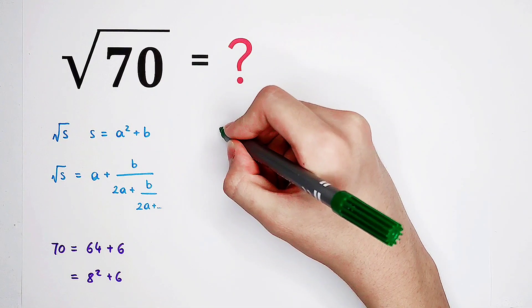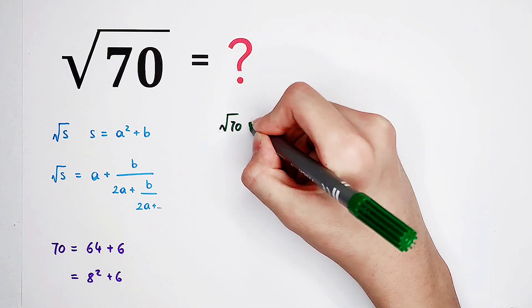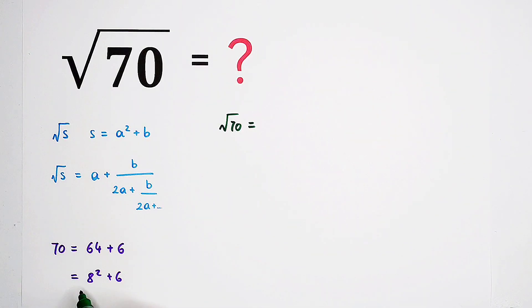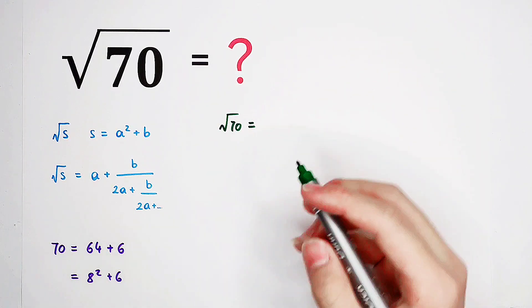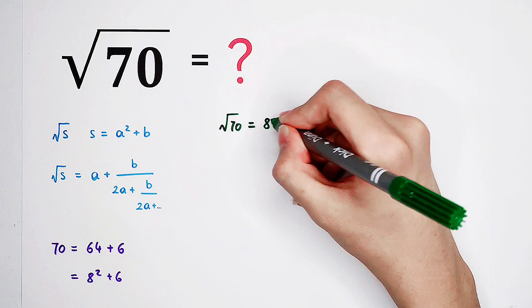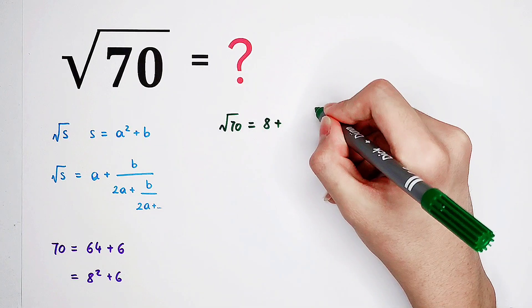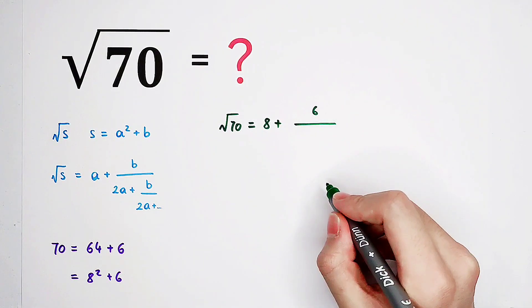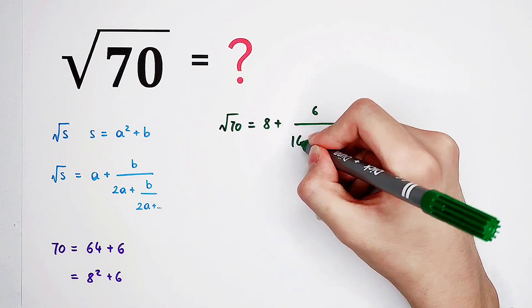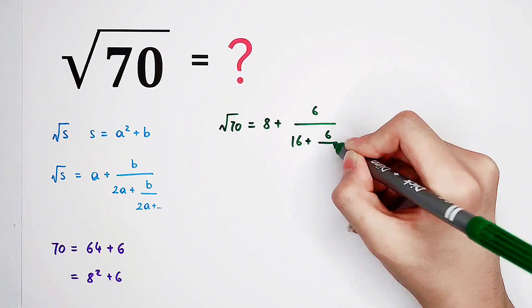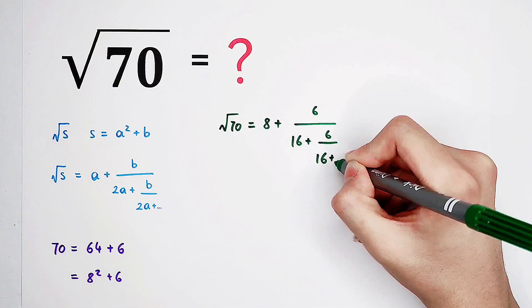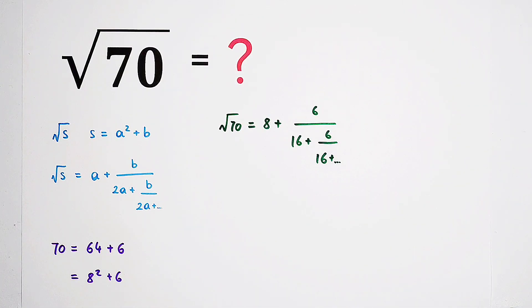Then, square root of 70 is, of course, a is 8, b is 6. It is a plus 8 plus 6 over 2a is 16, plus 6 over 16, plus 6 over 16, plus blah blah blah.